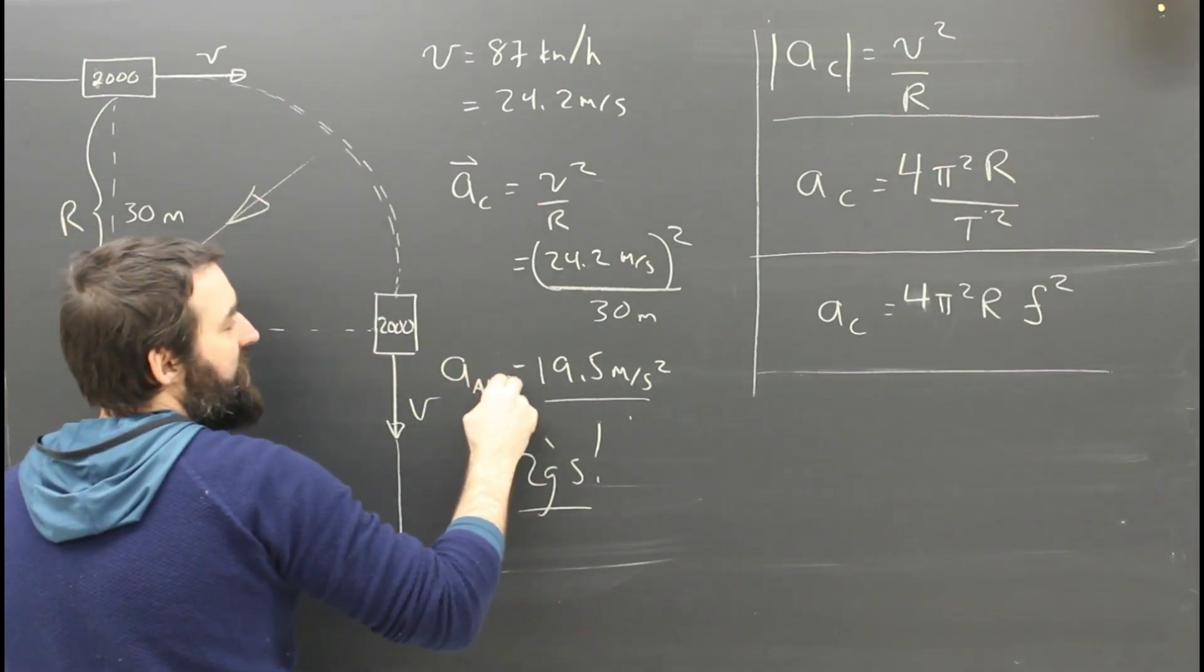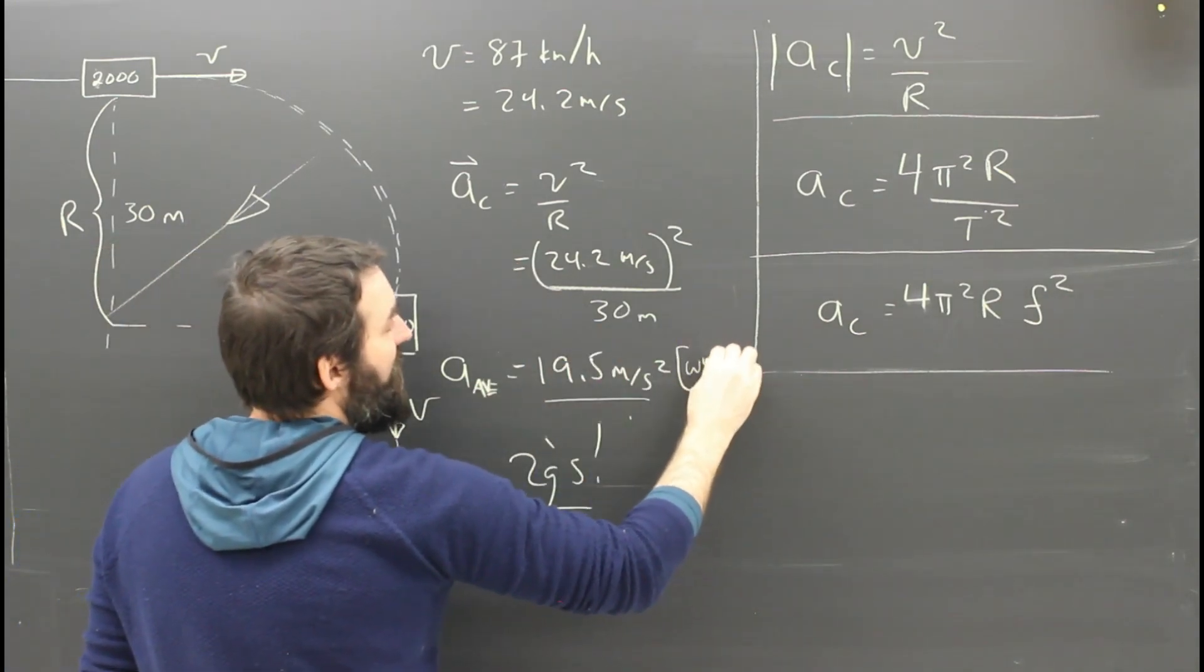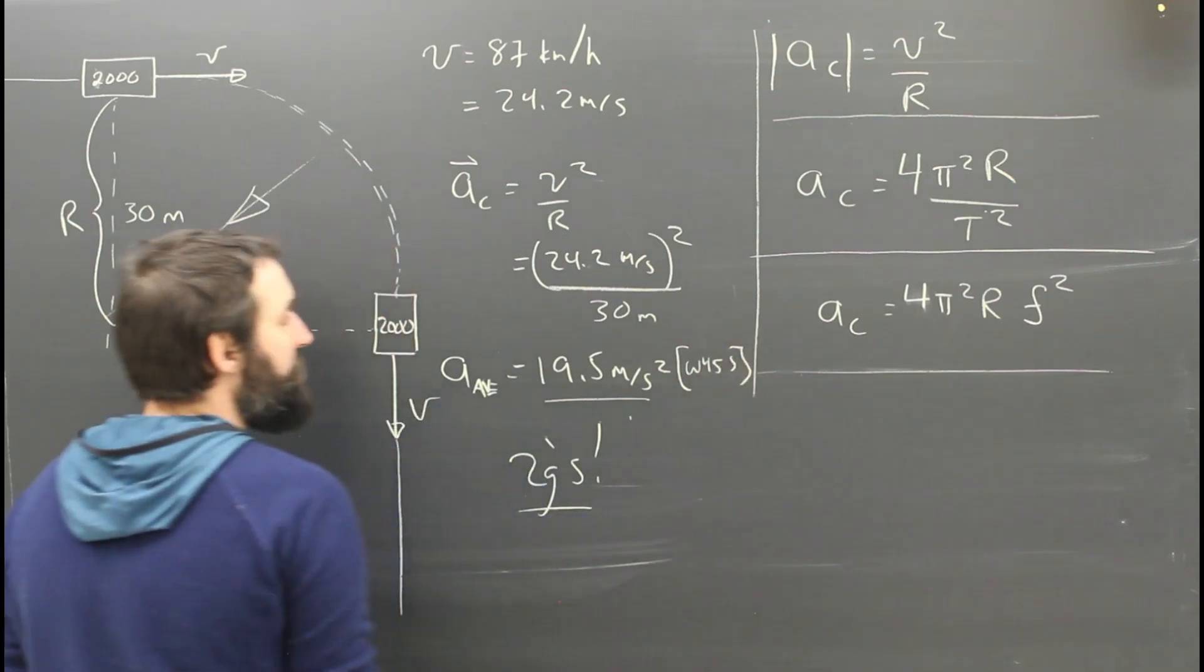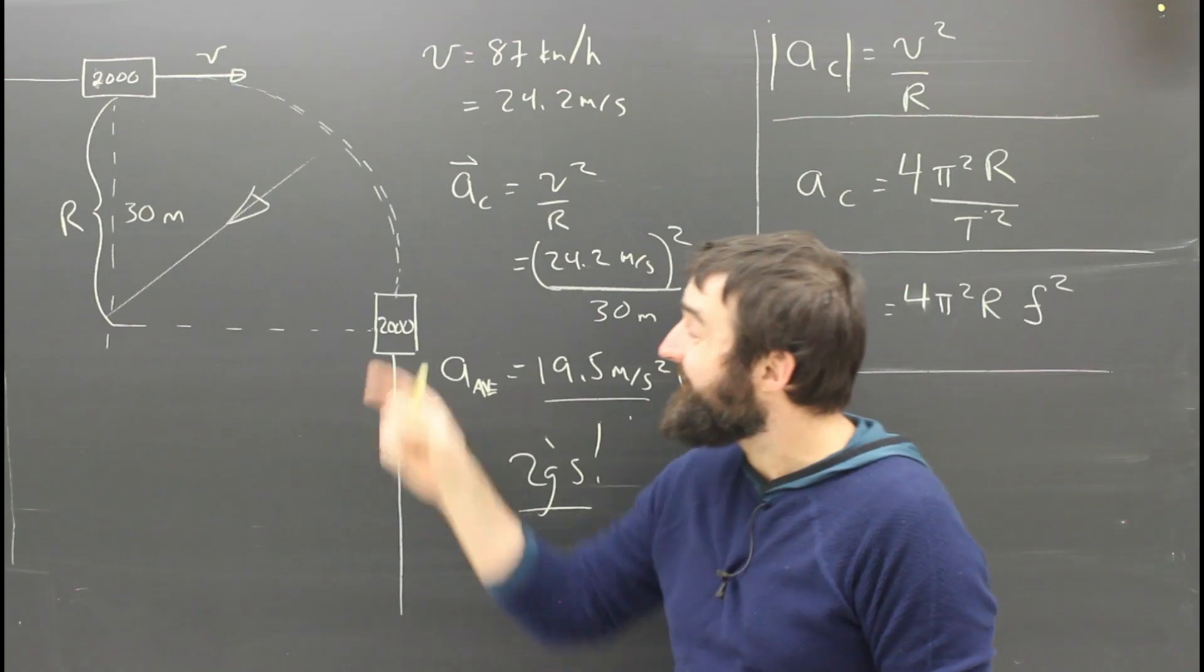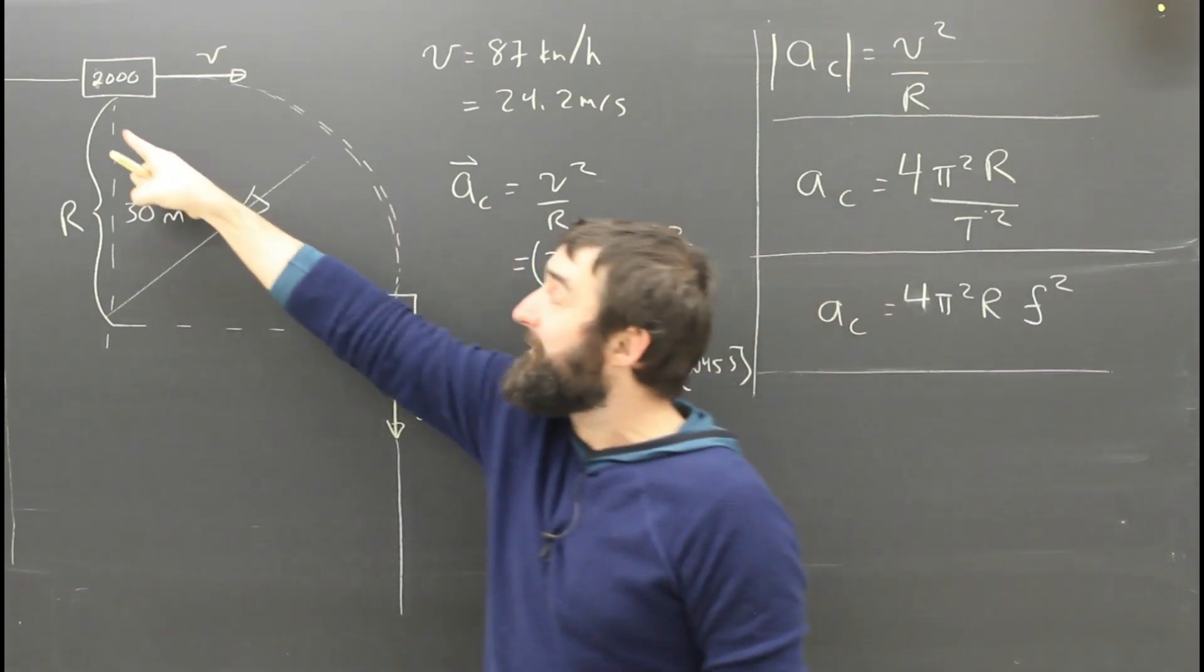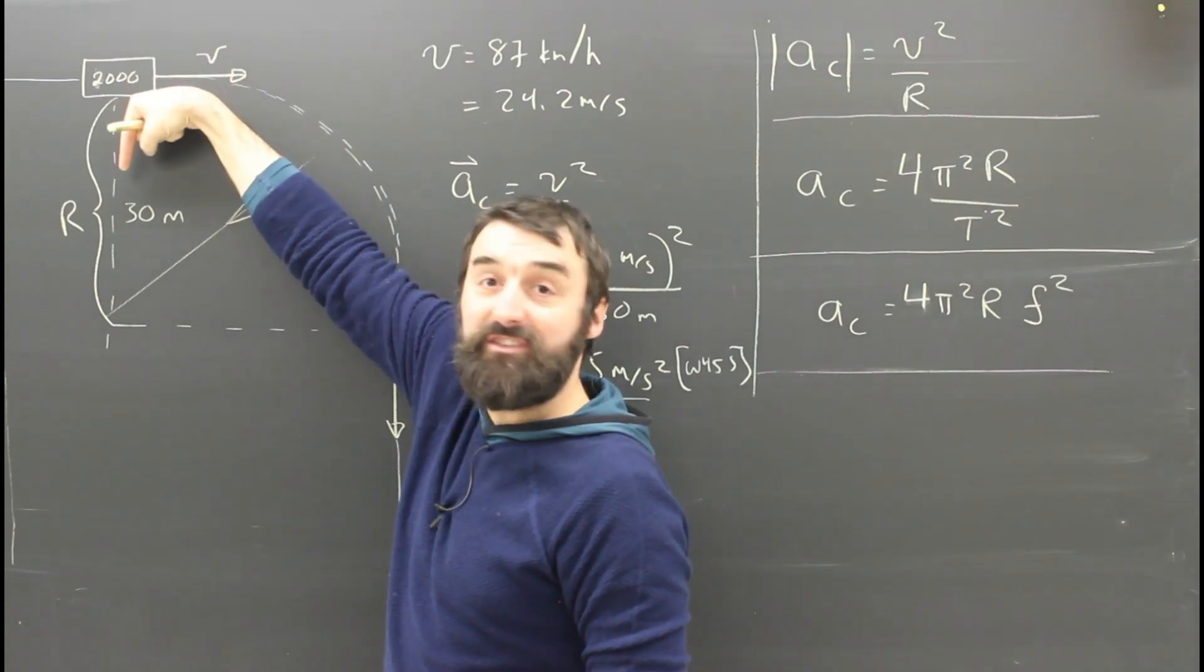That would be the average acceleration. But do you understand that the acceleration is constantly changing? At the very beginning of the curve, he's accelerating towards the center, which is south. As he turns, his acceleration changes.